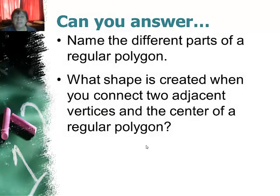Now when in class I expect you to be able to answer some of these. Can you name the different parts of a regular polygon? The radius, the apothem, the side, the central angle. What shape is created when you connect two adjacent vertices in the center of a regular polygon? So what are you making?